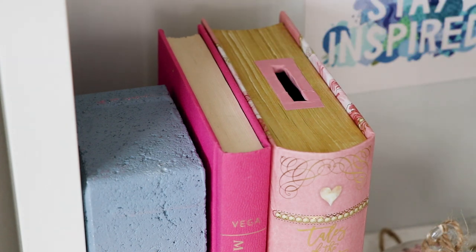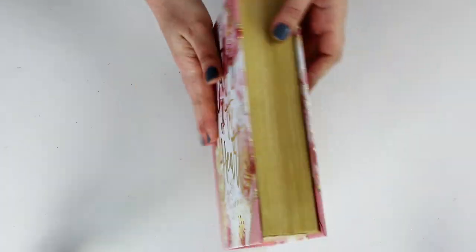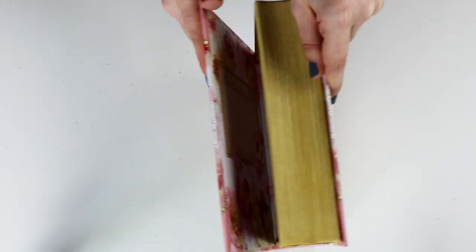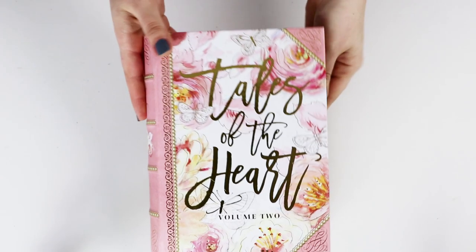First is the easy version. For this one, go to your local craft store and buy a book box. This looks like a book, but it's made out of thick cardboard and it's already hollowed out. Try to get one that has a magnetic closure already on it so that it stays closed even if you stand it up.